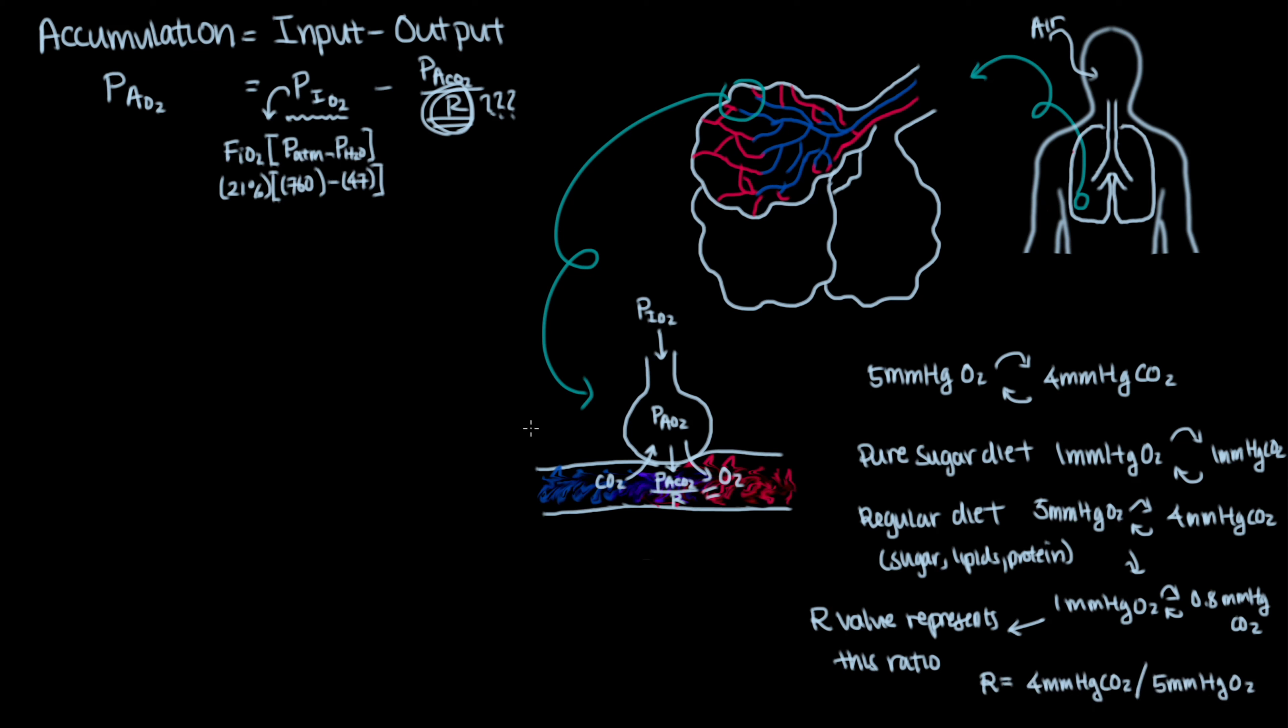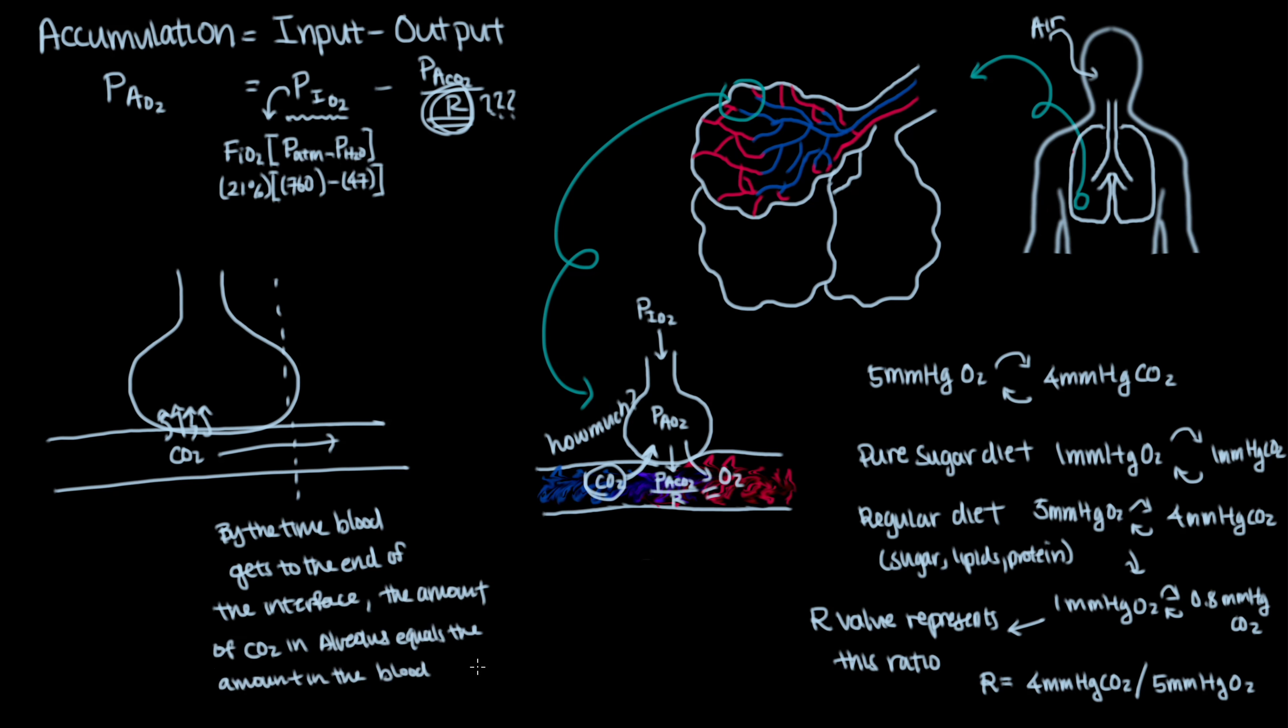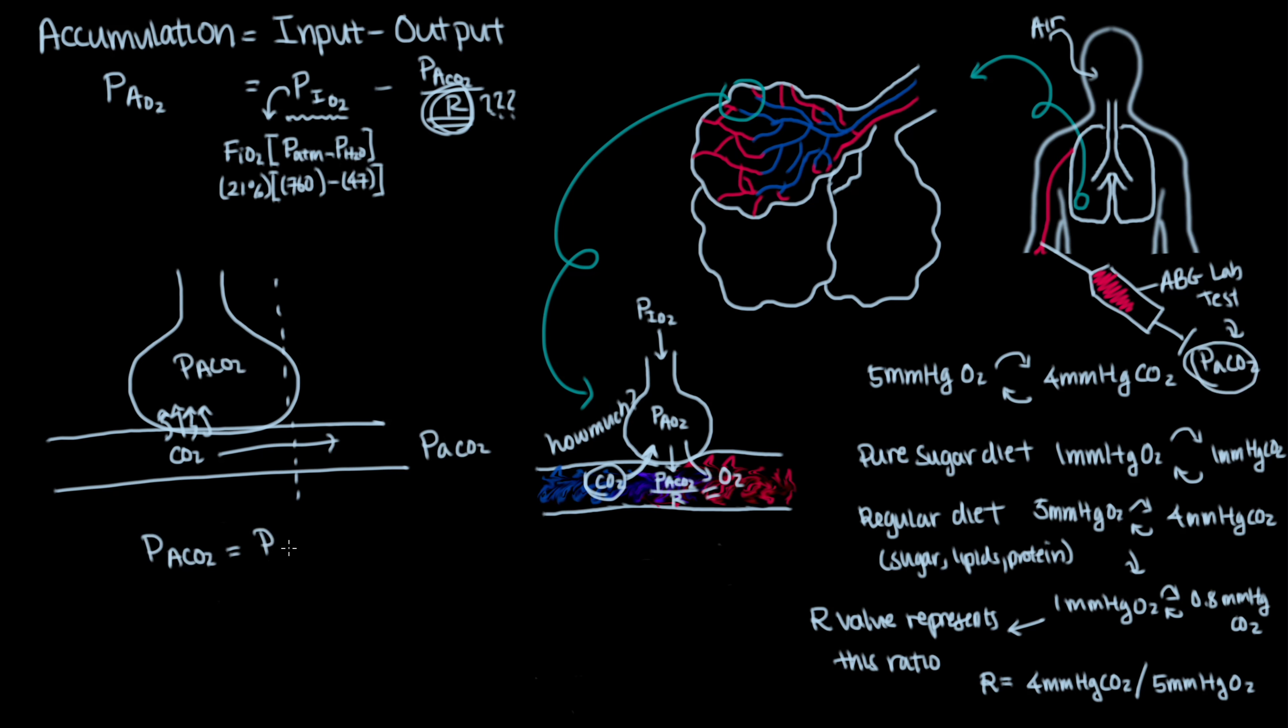This exchange thing is great and all, but this would require knowing how much carbon dioxide came into the alveolus. Thankfully, there's a solution. Because carbon dioxide diffuses very, very quickly, we can make the assumption that the carbon dioxide always equilibrates between the alveolus and the blood at the capillary alveolar interface. This means that we can further say that the partial pressure of carbon dioxide from the arterial blood gas is representative of the partial pressure of carbon dioxide in the alveoli.